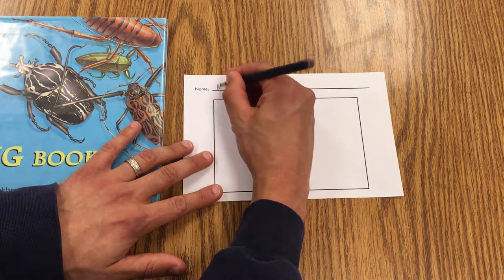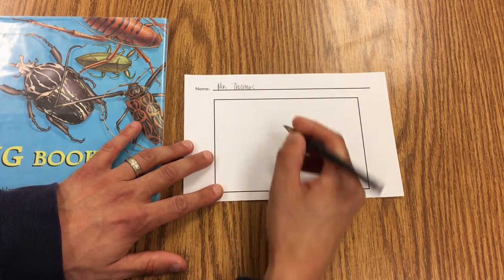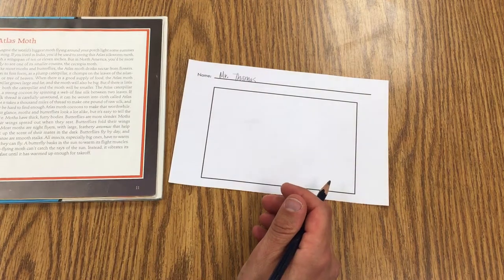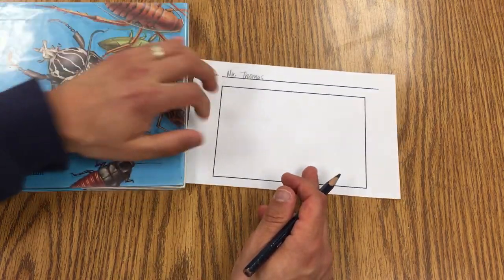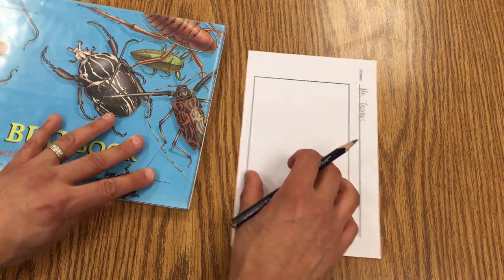So the first thing I do is always the same. I take out my pencil and write my name and then you always want to have reference material to look at. So I'm going to go ahead and try to draw this beetle on the front. So I can turn this paper this way.